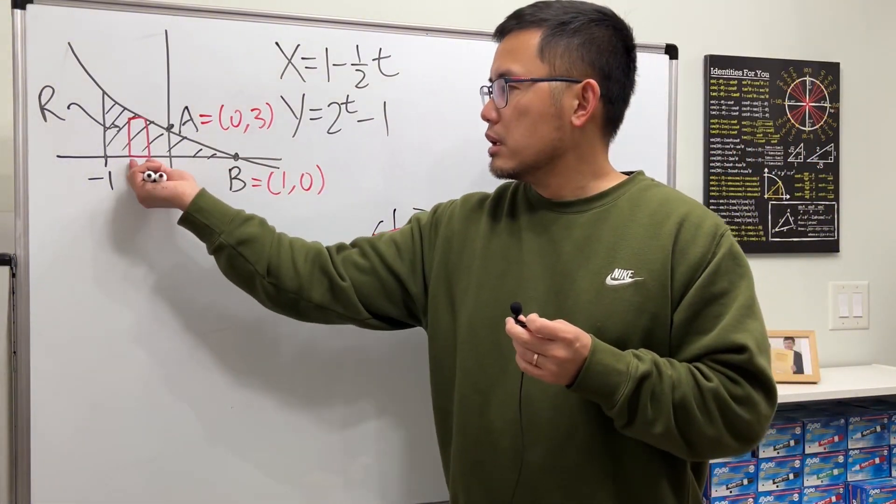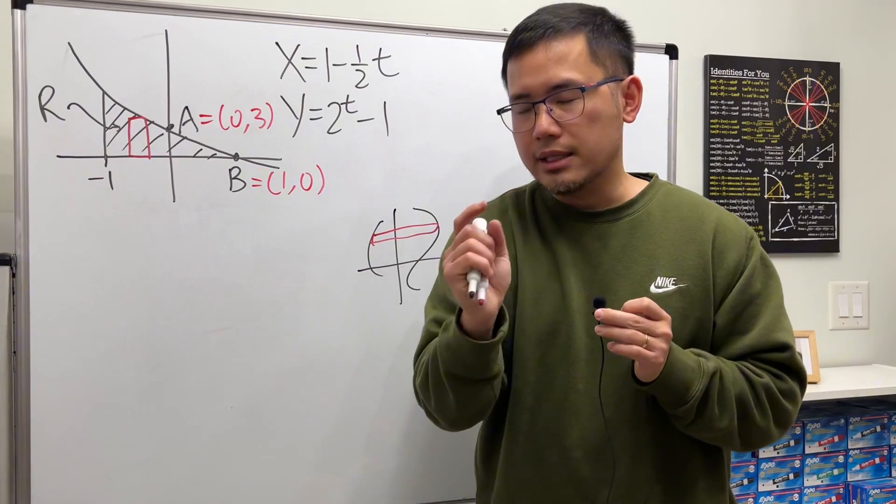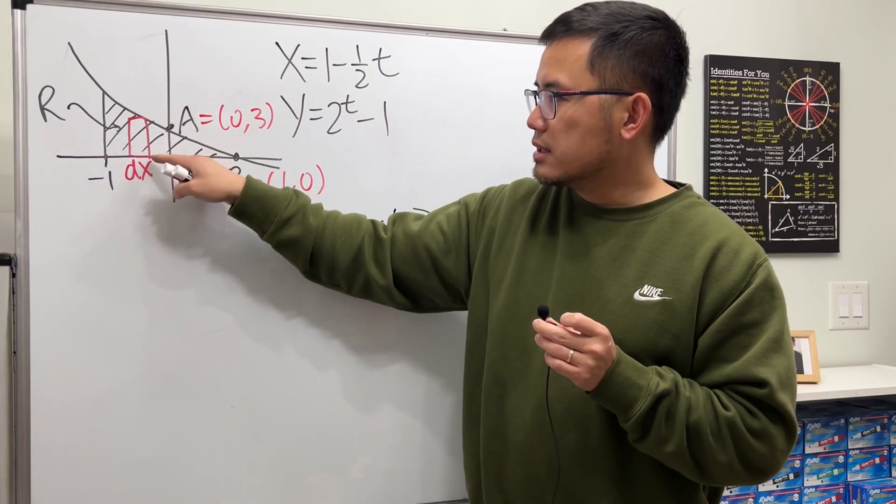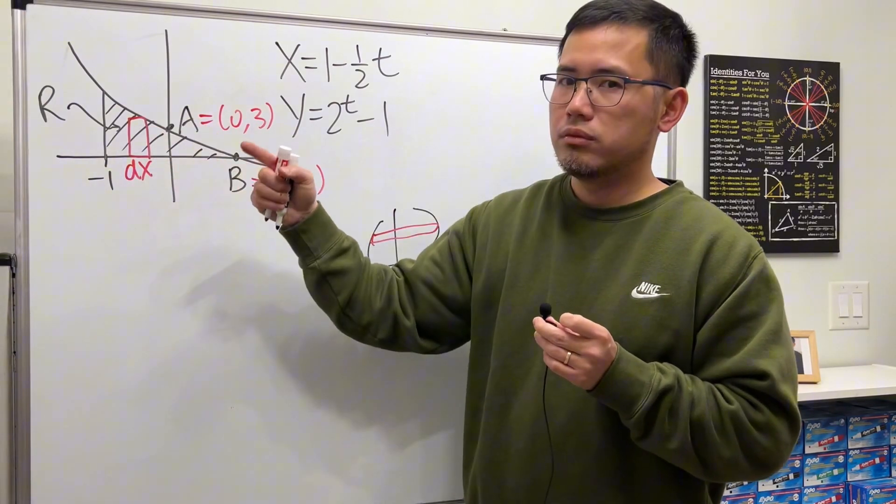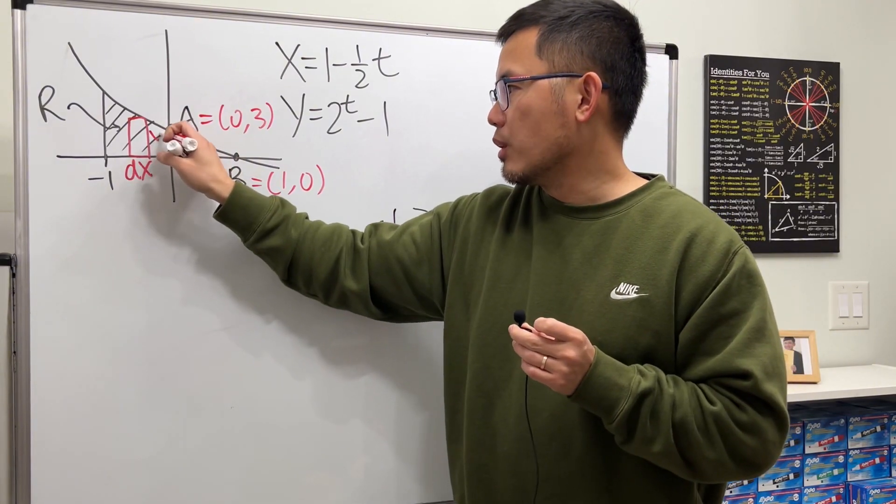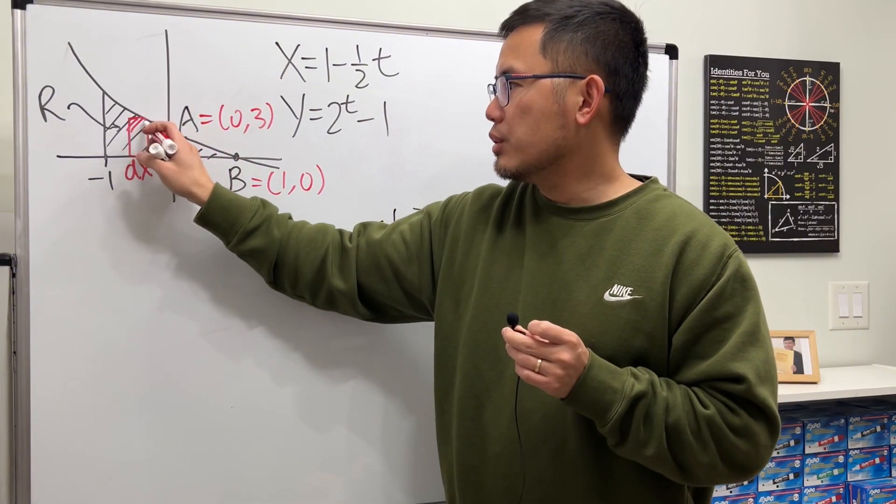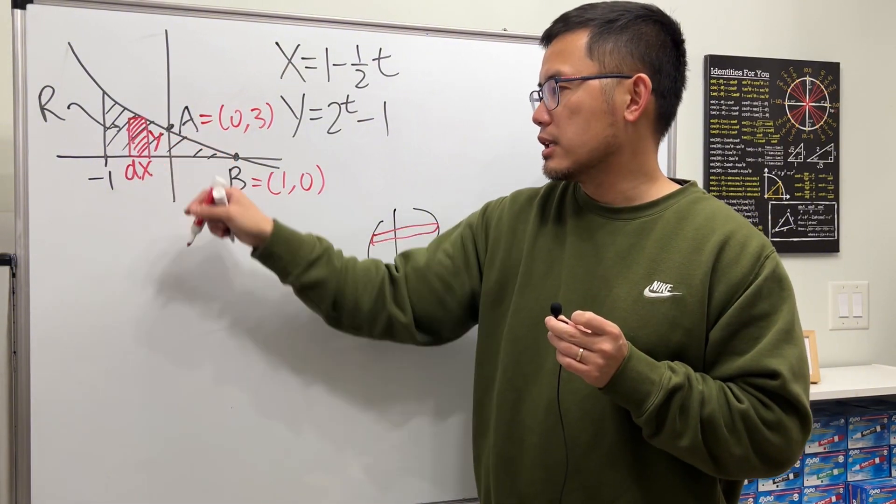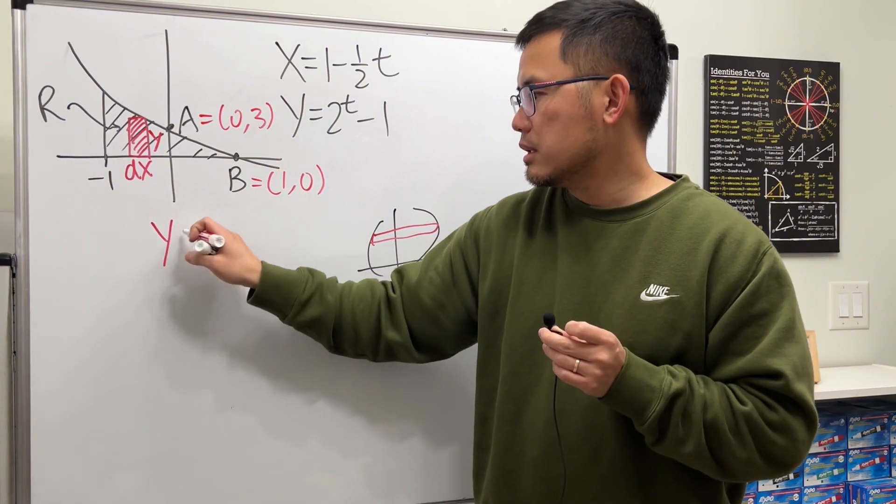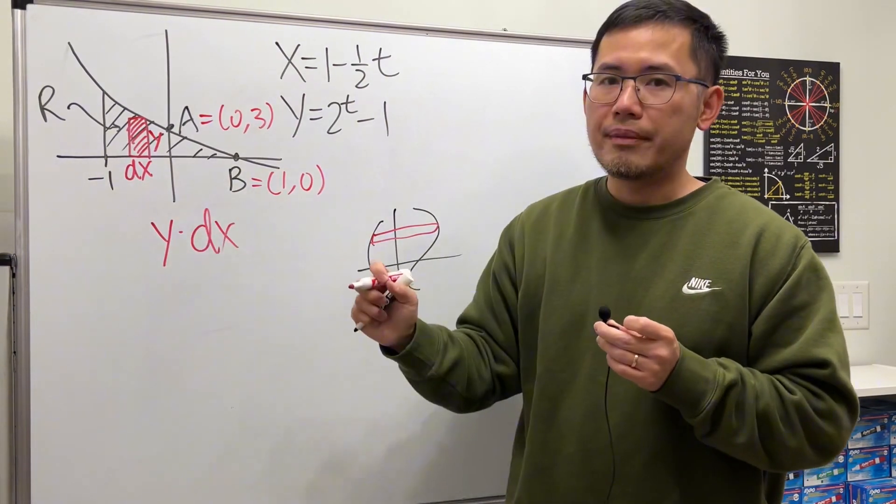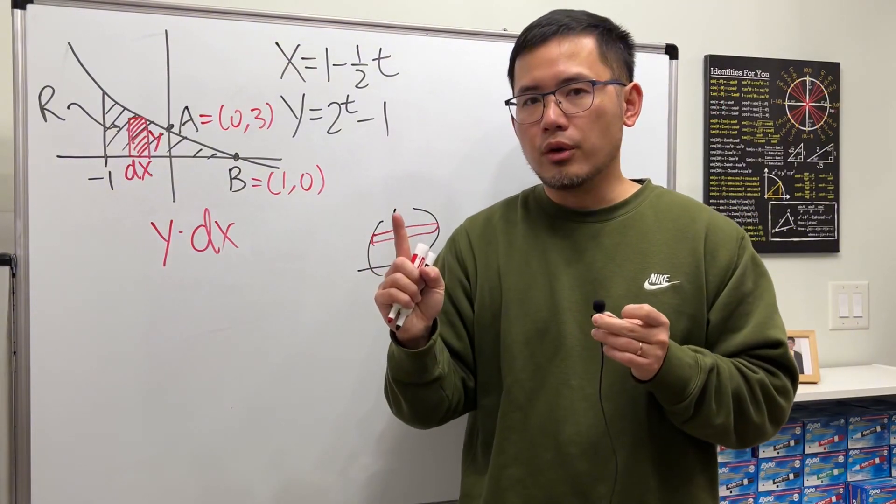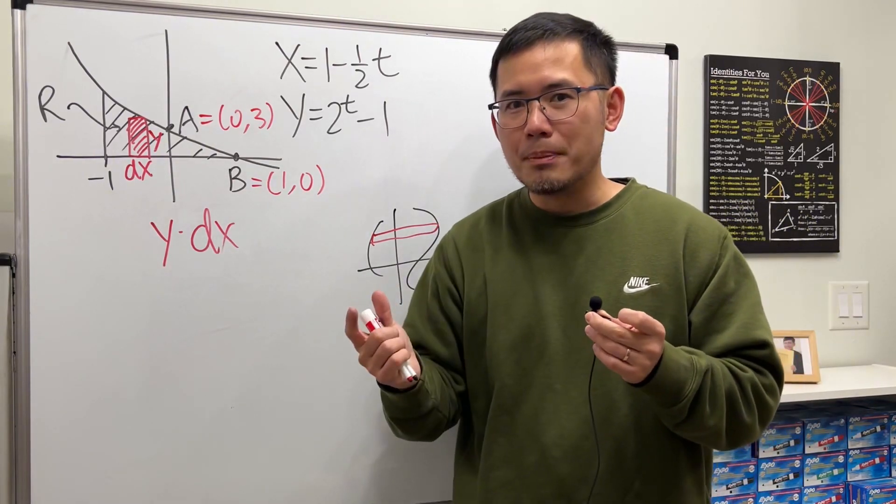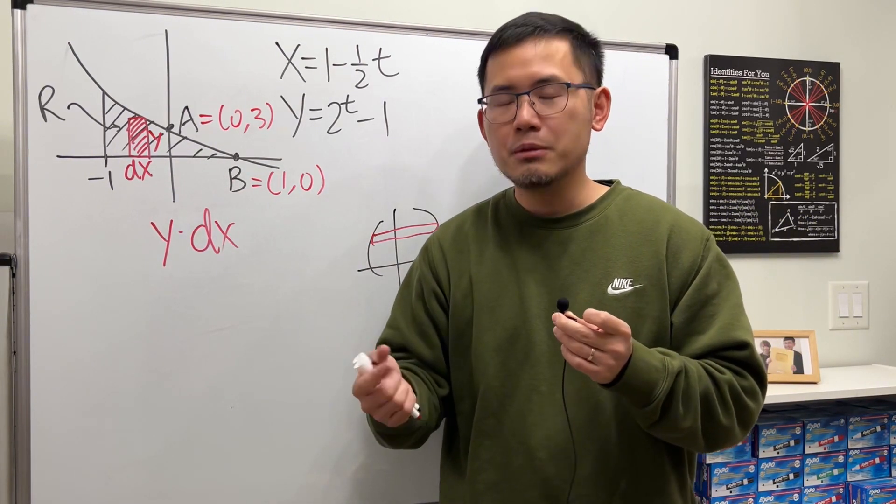Once we have this, the base right here is just a small change in x. Let's denote that by dx. The vertical distance from the x-axis to the curve, that's precisely the y. So let's go ahead and figure out the area of this red rectangle first. It's just base times height, so y times dx. But this is just one rectangle. We want all the rectangles from here to here. In calculus, we add them up by using the super summation, which is integral. You add them up with integration.